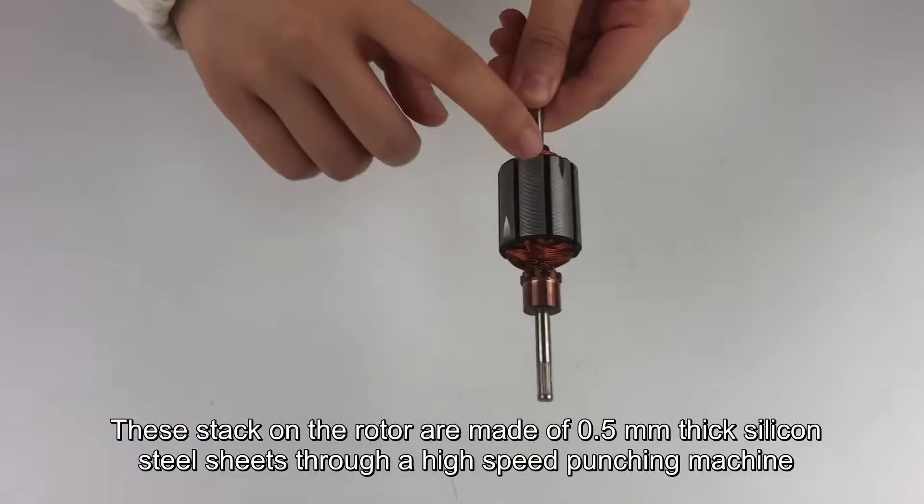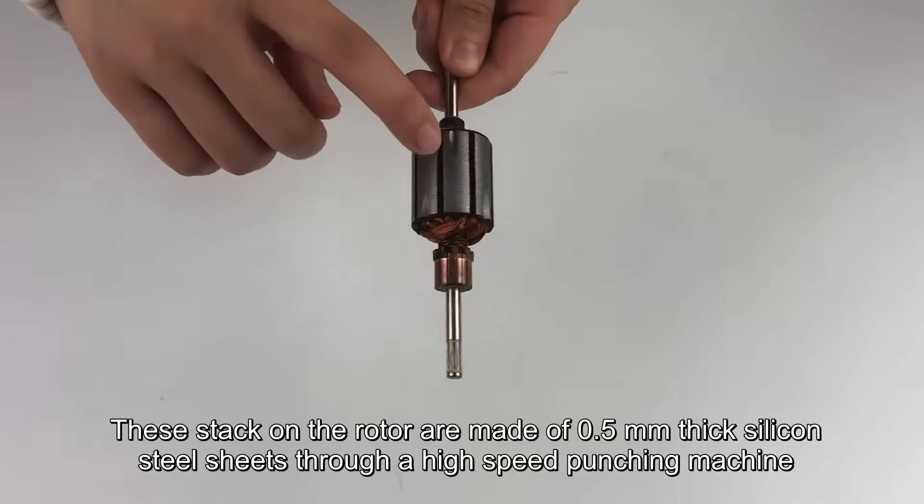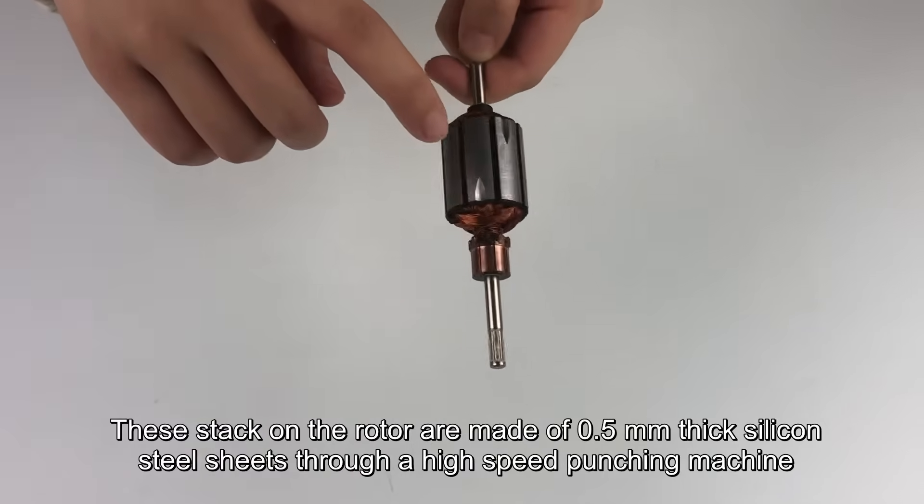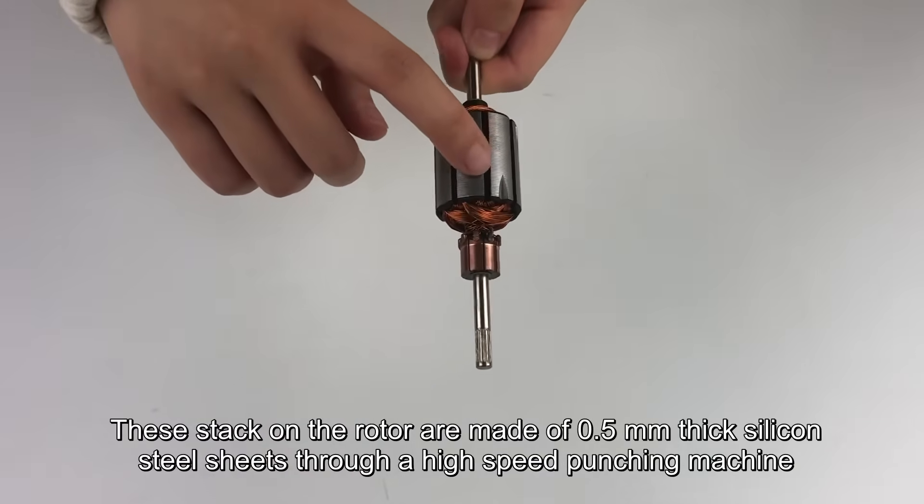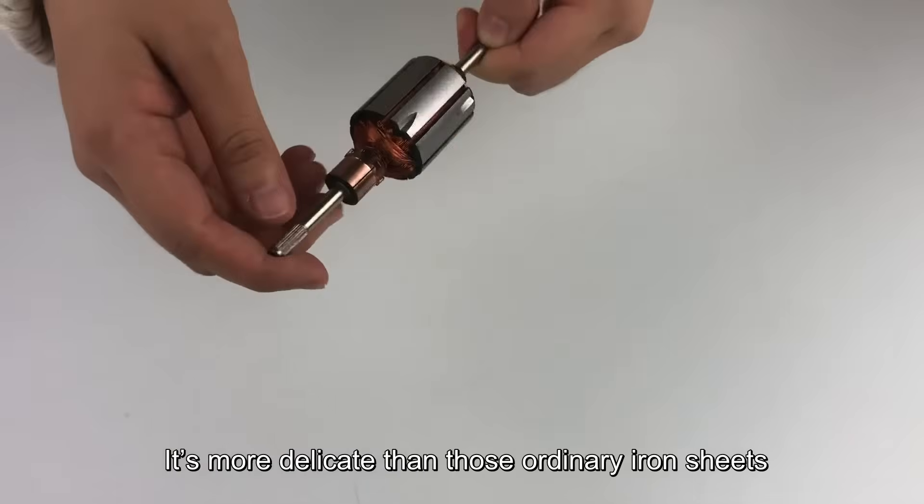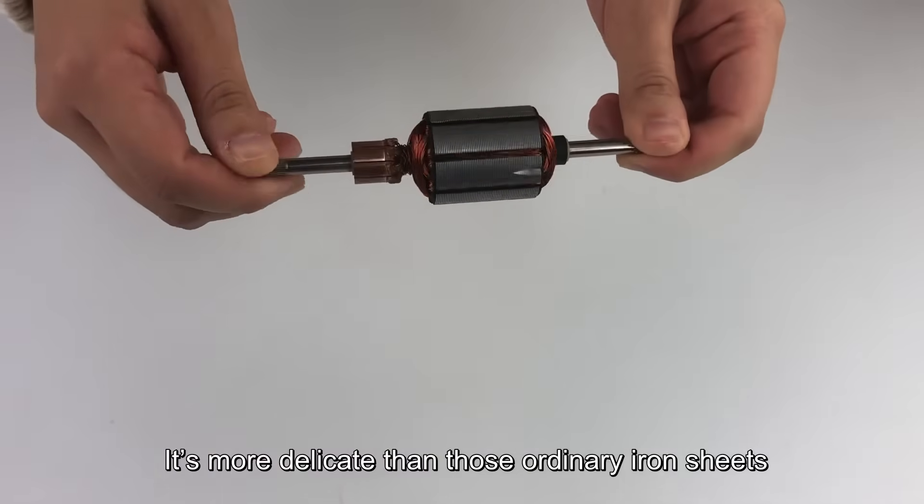These stackers on the rotor are made of 0.5 mm thick silicone steel sheets through a high-speed punching machine. It's more delicate than those ordinary iron sheets.